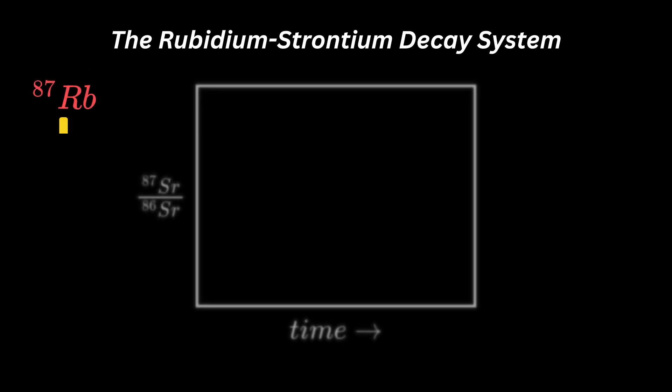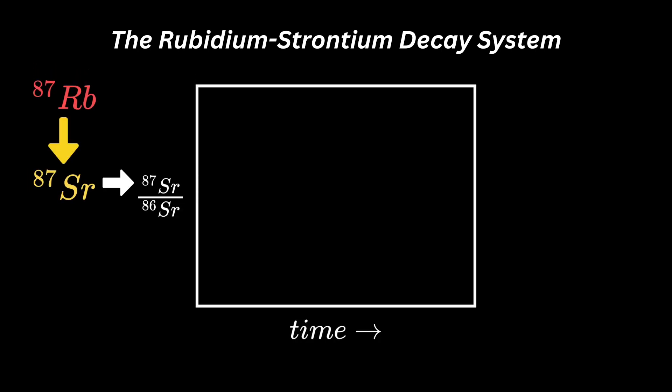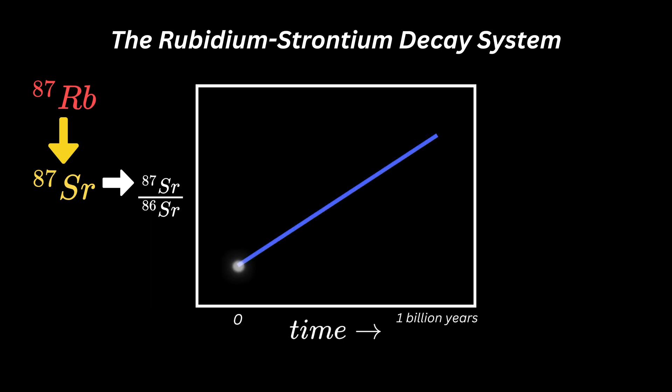So for any given mineral, the ratio of radiogenic 87 strontium to the stable isotope 86 strontium will increase logarithmically with time. Because of the incredibly long half-life, however, this curve will appear to be flat on most timescales of earth history.